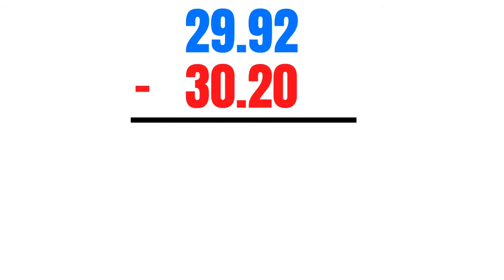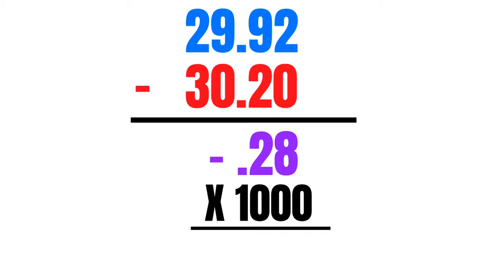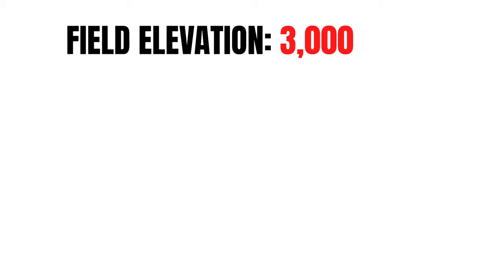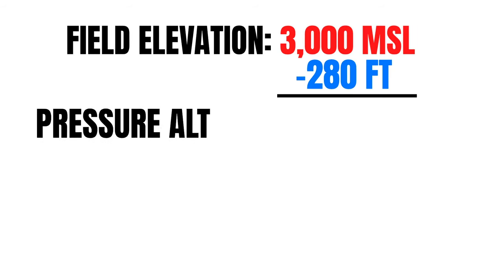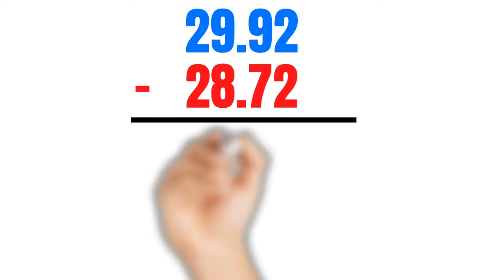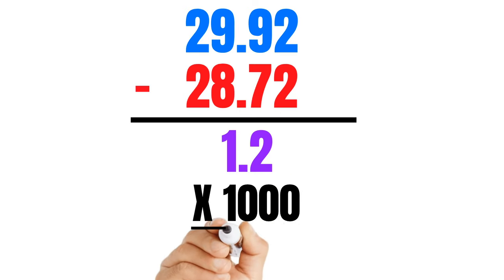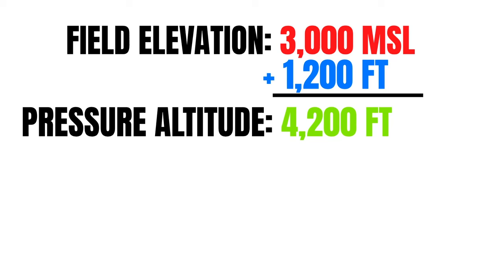My favorite method is because you don't need any special tools. All you have to do is take the current altimeter setting at your local field and subtract it from the standard altimeter setting of 29.92. Let's say the current altimeter setting is 30.20. If we subtract that from 29.92 inches, we get negative .28. We multiply this times 1,000 because we lose an inch of mercury every thousand feet, giving us negative 280 feet. If our field elevation was 3,000 feet MSL, we'd subtract 280 to get a pressure altitude of 2,720 feet. If our altimeter setting was 28.72, we'd get a positive 1.2, multiply by 1,000 to get 1,200, and add that to 3,000 feet for a pressure altitude of 4,200 feet.